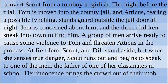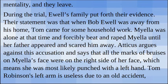The night before the trial, Tom is moved into the county jail and Atticus, fearing a possible lynching, stands guard outside the jail door all night. Jem is concerned about him and the three children sneak into town to find him. A group of men arrive ready to cause some violence to Tom and threaten Atticus in the process. At first, Jem, Scout and Dill stand aside, but when she senses true danger, Scout runs out and begins to speak to one of the men — the father of one of her classmates in school. Her innocence brings the crowd out of their mob mentality and they leave.